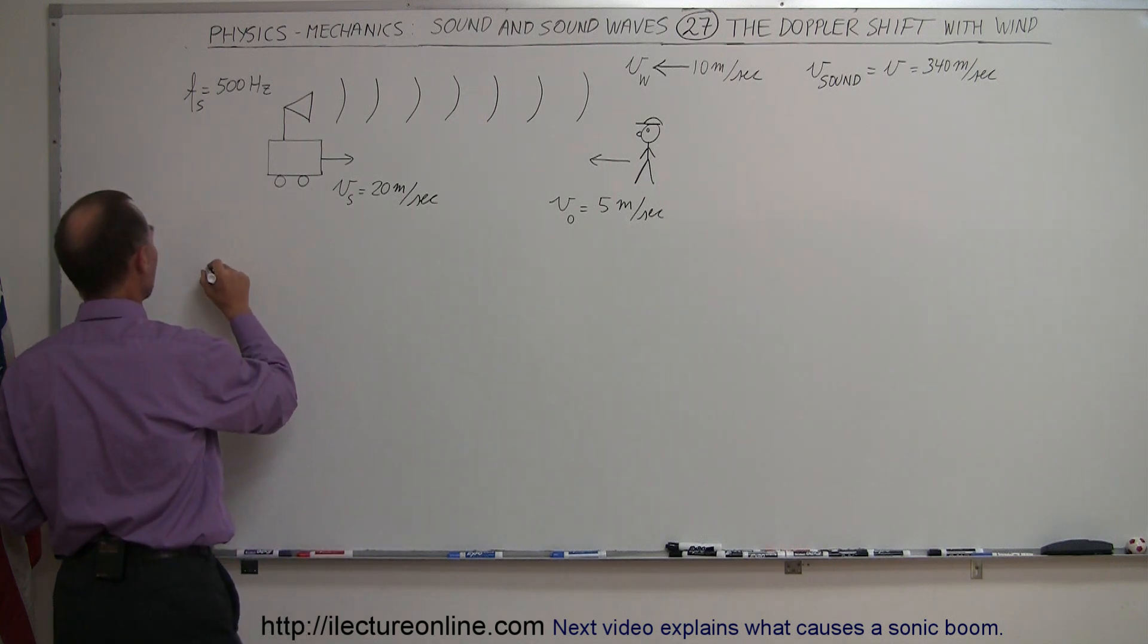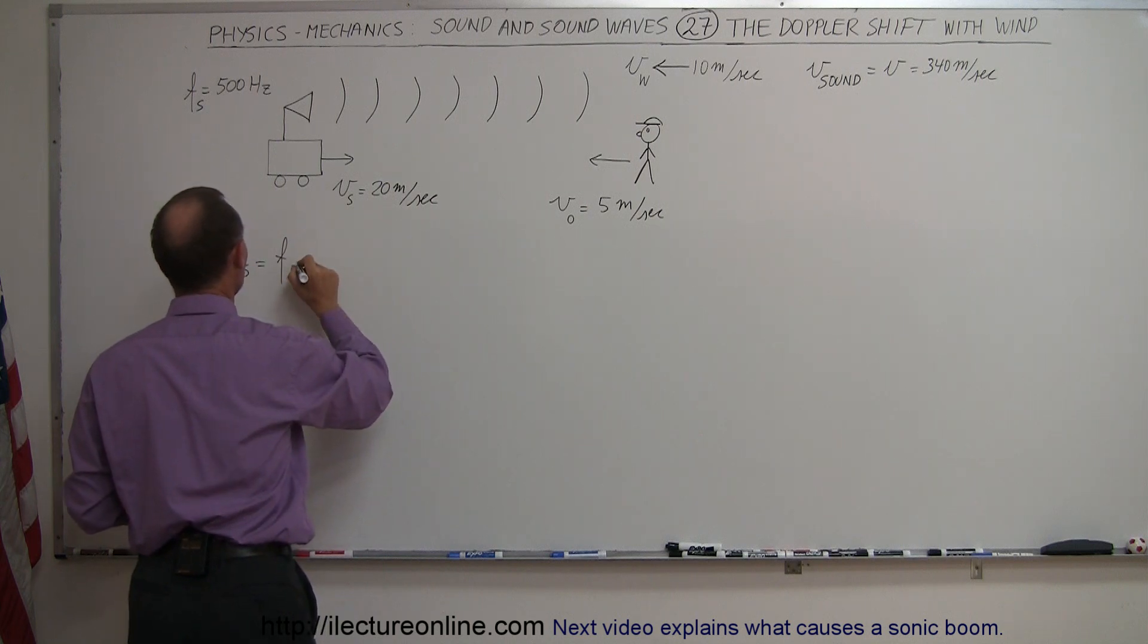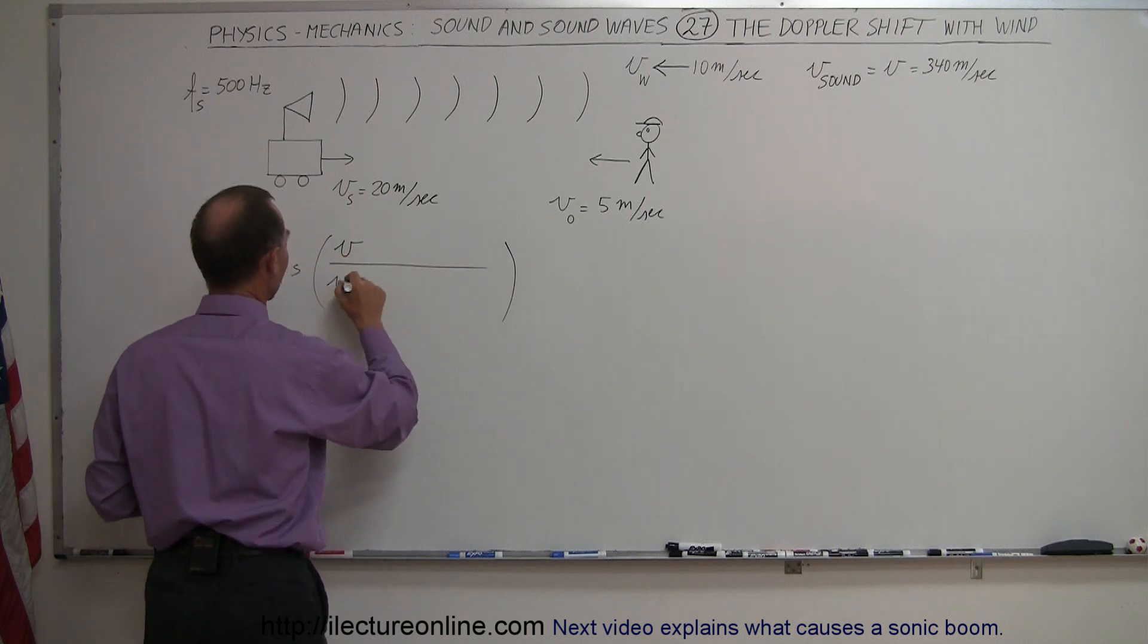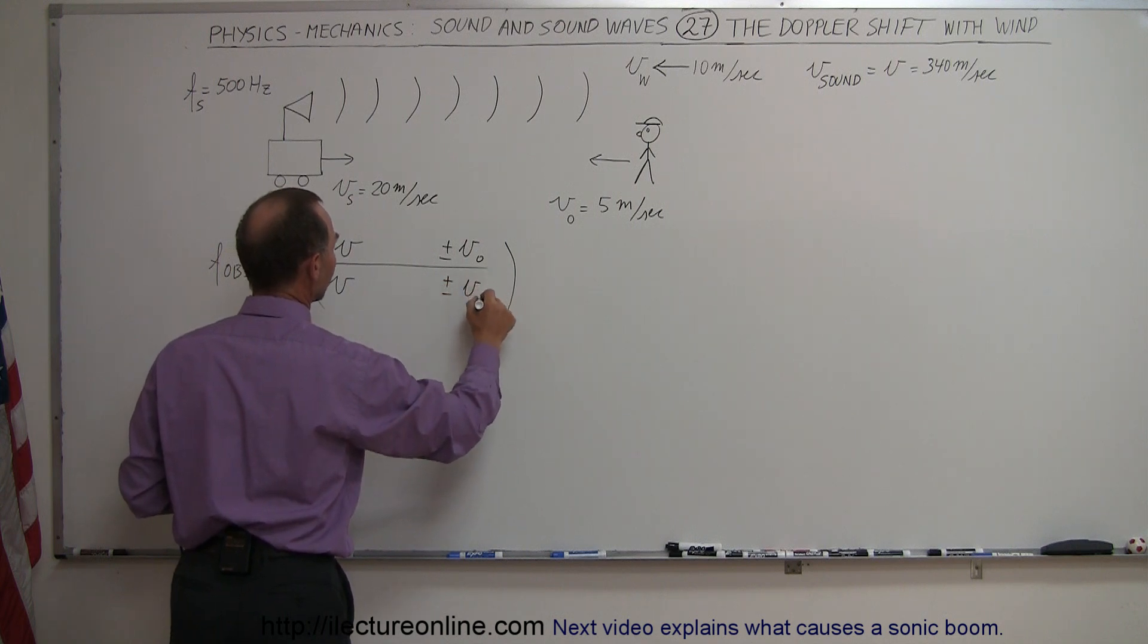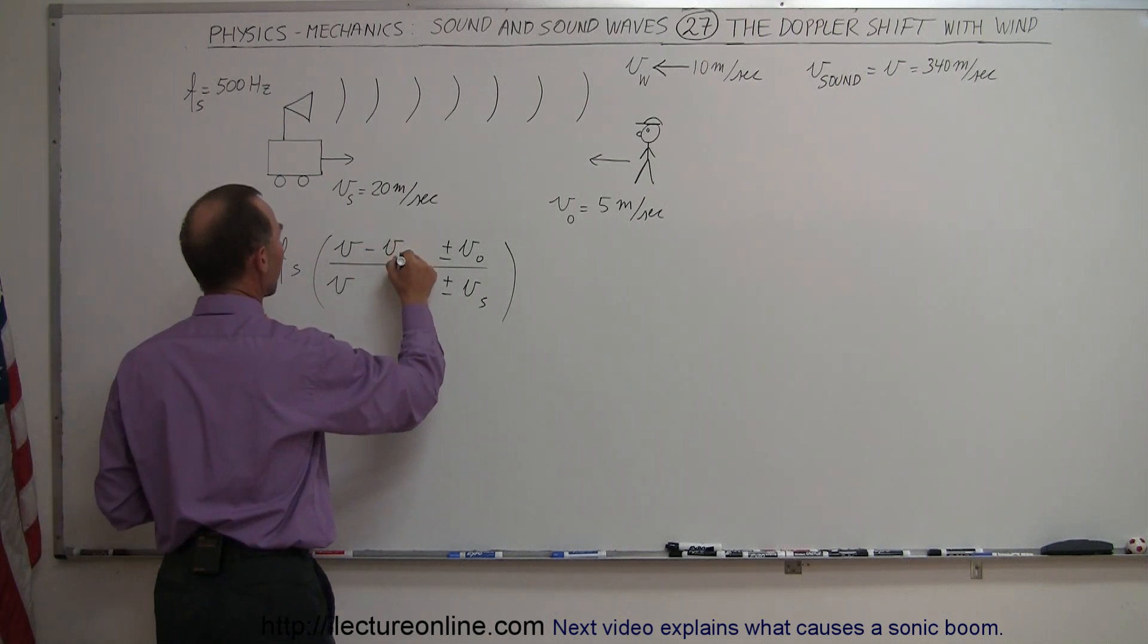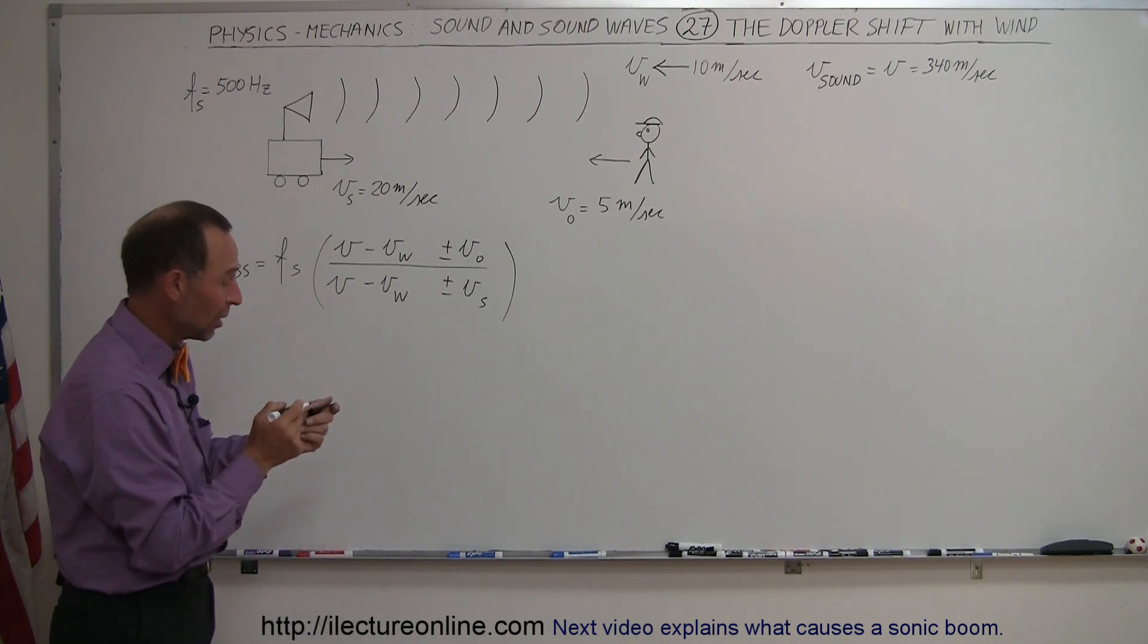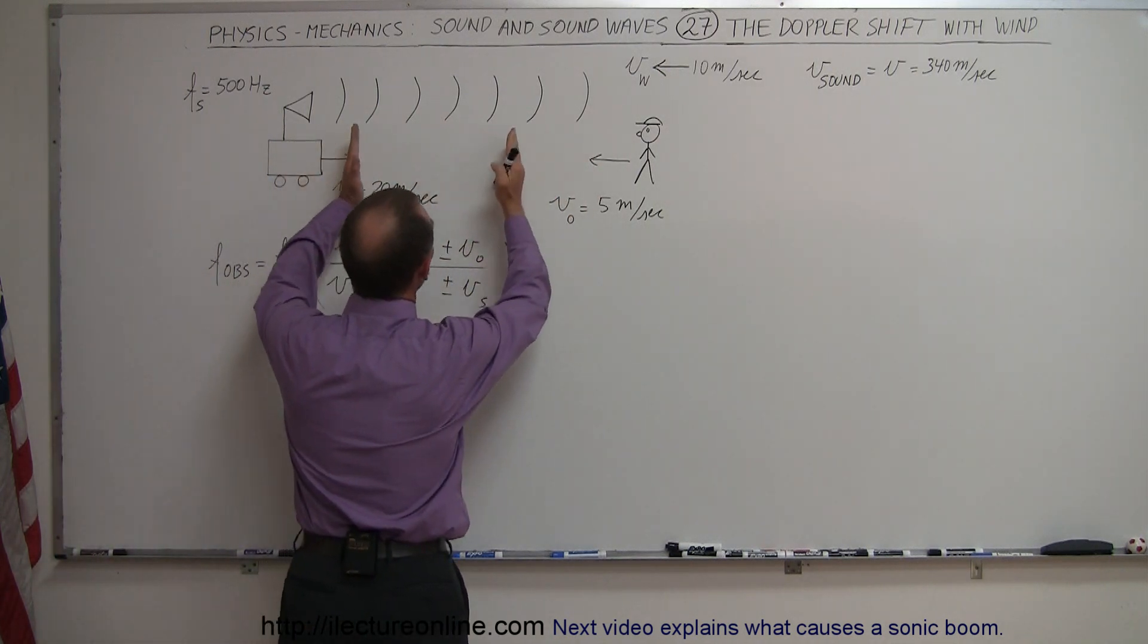According to this equation, the frequency observed equals the frequency of the source times the velocity of sound in air divided by velocity of sound in air plus or minus the velocity of the observer plus or minus the velocity of the source. But over here what we need is the velocity of the wind. In this case it's going to be minus the velocity of the wind, because in essence it has the effect of slowing down the sound waves by moving the whole medium to the left, so the sound waves will take longer to get there.